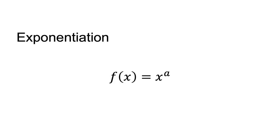Exponentiation is a mathematical operation where a number is multiplied by itself a certain number of times. It is written as f of x equals x to the power of a — that is, x is multiplied by itself a times.